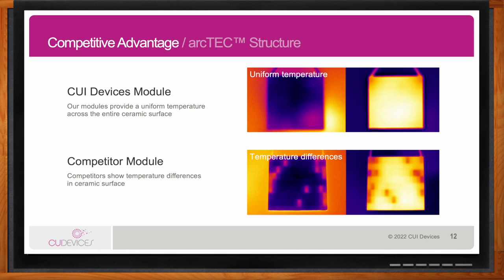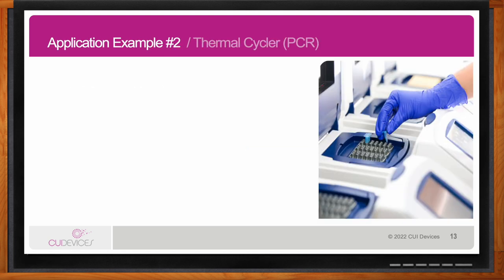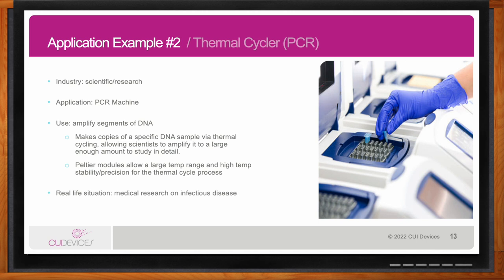Thermal images of a competitor's similar module show little pockets scattered over the surface of the ceramics in different colors, indicating different temperatures on those spots on the ceramic plates. An application that can directly benefit from CUI Devices' ARC tech structure is a PCR thermal cycler machine in the scientific research industry. These machines are extremely important to medical research for finding causes and cures for infectious disease. The PCR machine makes copies of a specific DNA sample through the process of thermal cycling, amplifying small samples of DNA into a large enough amount to study in detail.